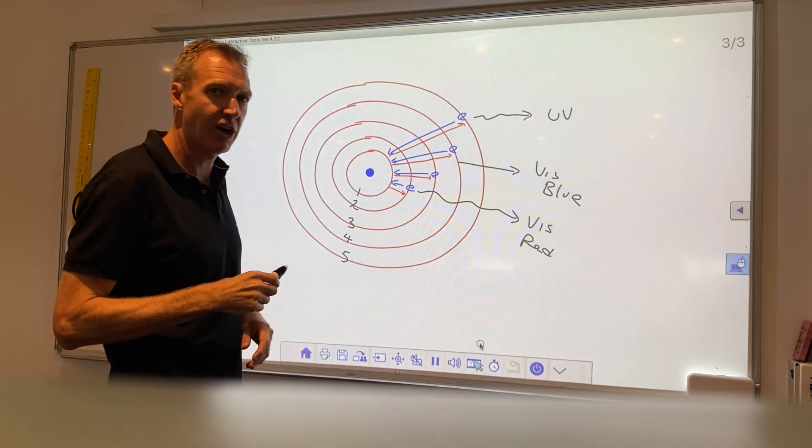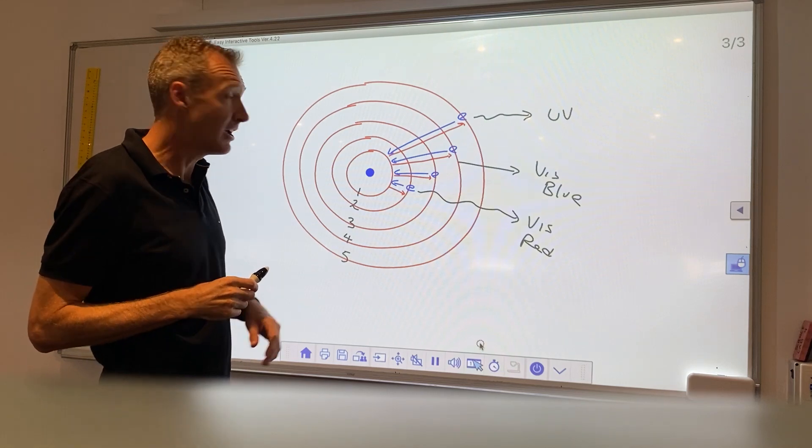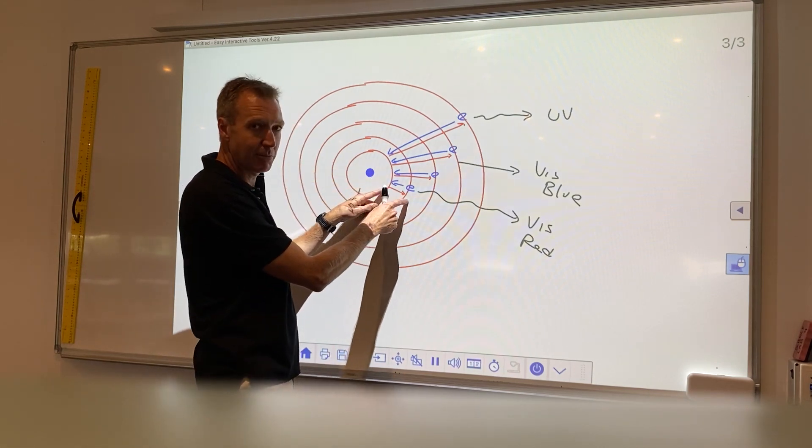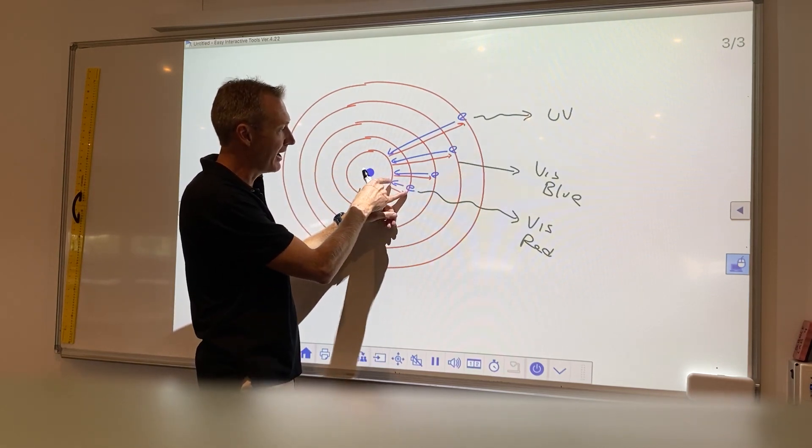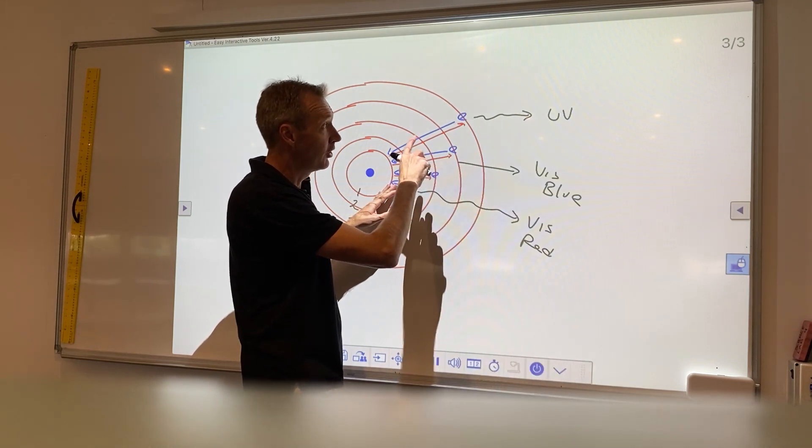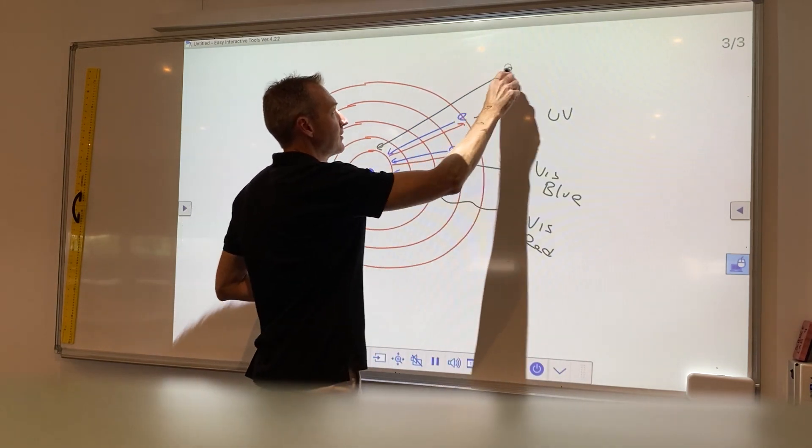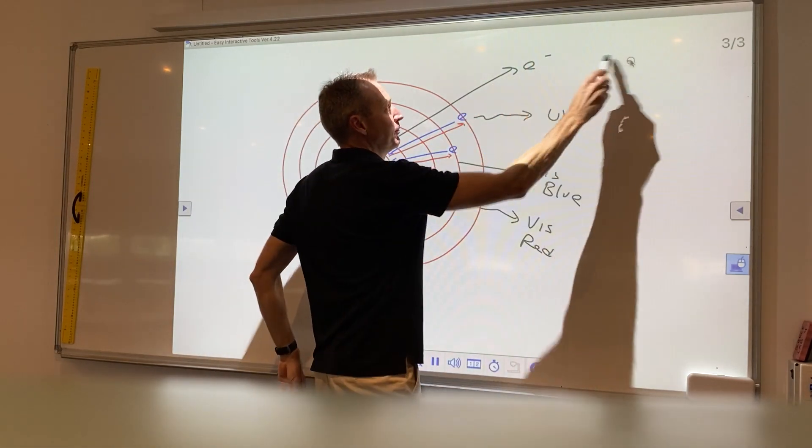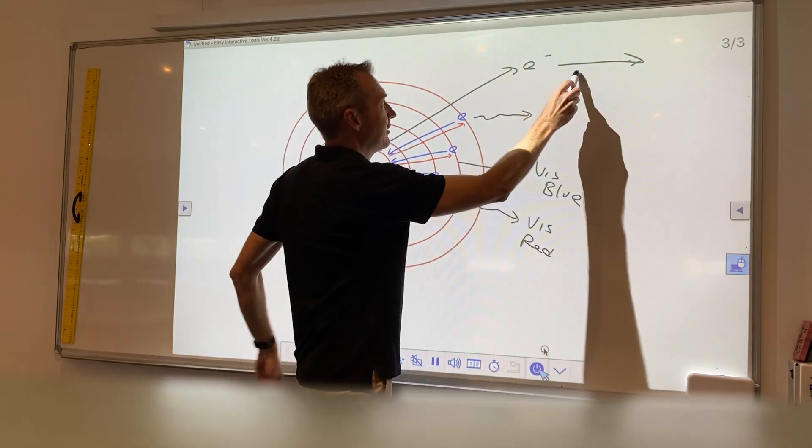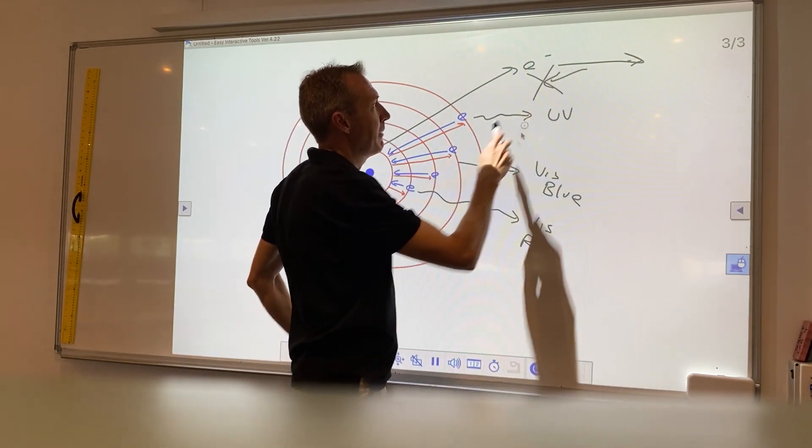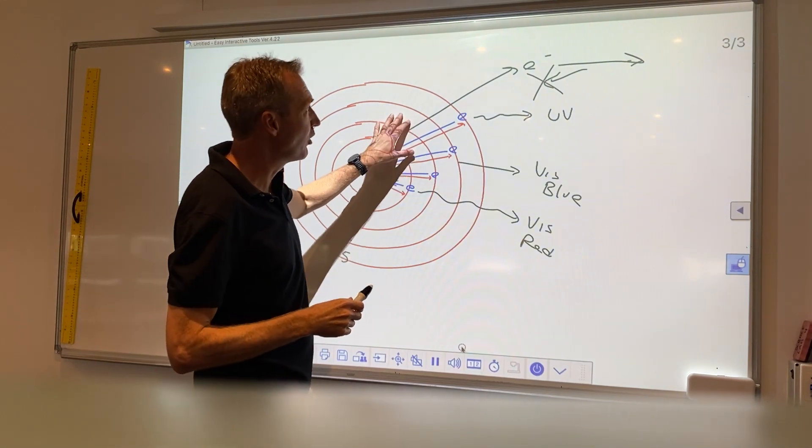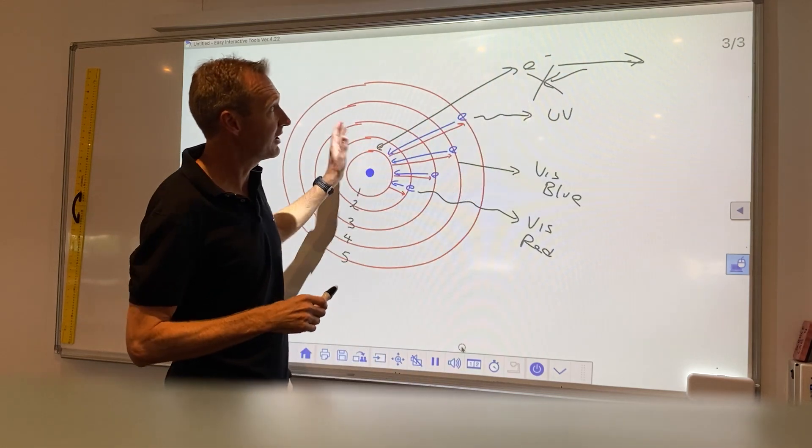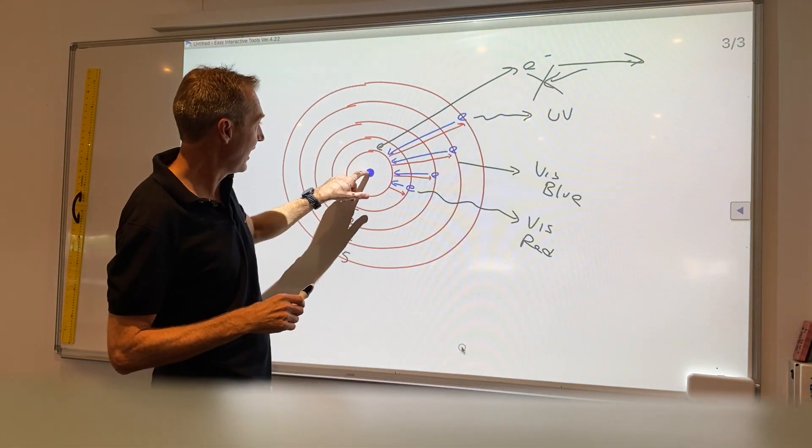But what happens if the electrons—remember, the electrons have to put energy in to get them up an energy level, and then they drop back down and release energy—what happens when the electron gets shot so far out it just basically disappears? It can't drop back into the atom, and so we weren't seeing that massive infinite energy being produced because the electron had gone outside the actual atom.